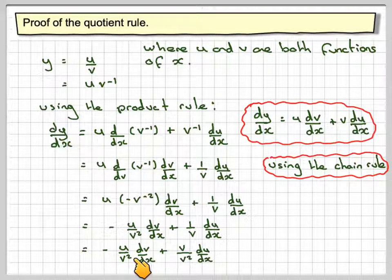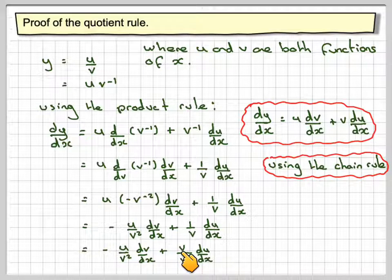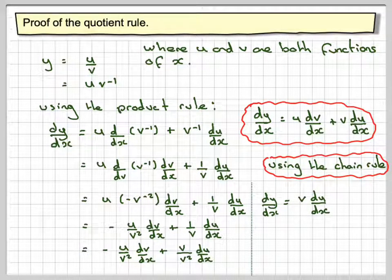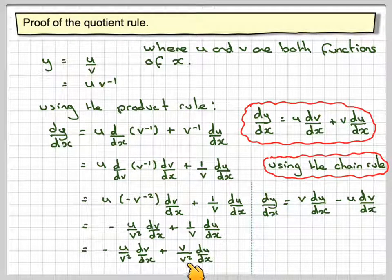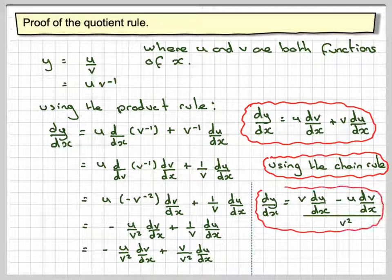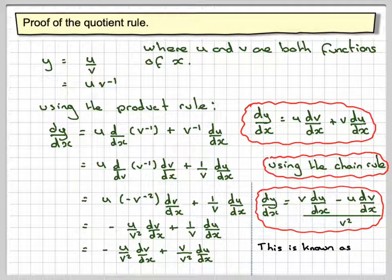Now normally, because we don't want a negative sign at the front, we're going to write v du by dx. So dy by dx is v du by dx minus u dv by dx. And because we've got a common denominator of v squared, that's all divided by v squared. And this is known as the quotient rule.